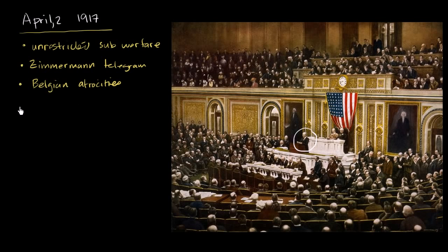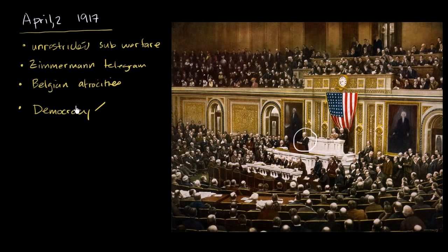Something that Wilson speaks very strongly about in his speech is the notion of fighting for democracy. In the First World War, the Central Powers — the German Empire and the Austro-Hungarians — are monarchies, with emperors controlling them. Even though the United Kingdom was nominally a kingdom, it was really a democracy, at least for those who could vote. So the UK is functionally a democracy, and so was the Third French Republic. There's this argument that the US is fighting for the representation of people.